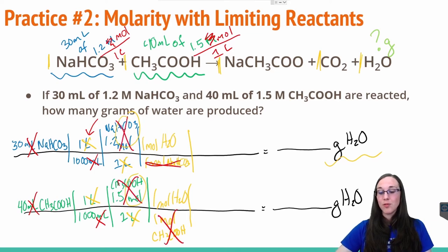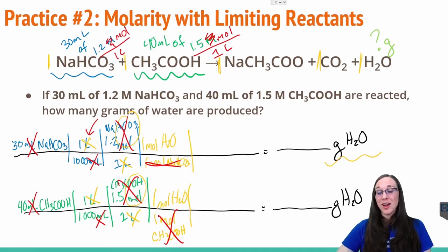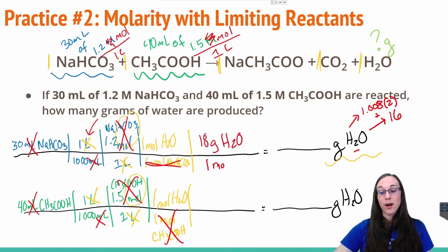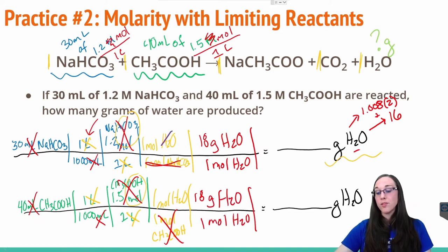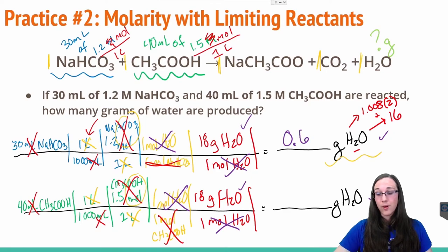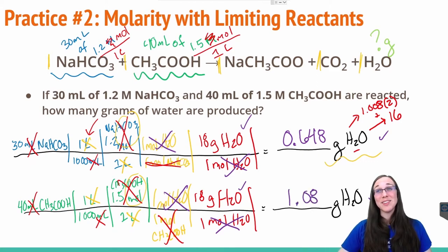The moles cancel and we're finally left with the right chemical, but not the right units. We still need the molar mass of water to get from moles to grams. Each oxygen weighs 16 and each hydrogen weighs 1.008, and there are two of those, giving us approximately 18 grams of water per mole. The moles of water cancel in both setups and we are left with grams of water. We get 0.648 grams of water from the perspective of the baking soda, or 1.08 grams of water from the perspective of the acetic acid.